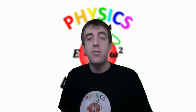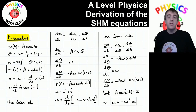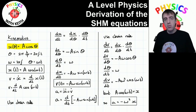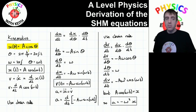In this video, we are going to derive the essential equations for simple harmonic motion. The first thing we're going to look at is the kinematics equations. The displacement of a body undergoing simple harmonic motion can be described with the wave equation — that is, the amplitude multiplied by the cosine of the phase.